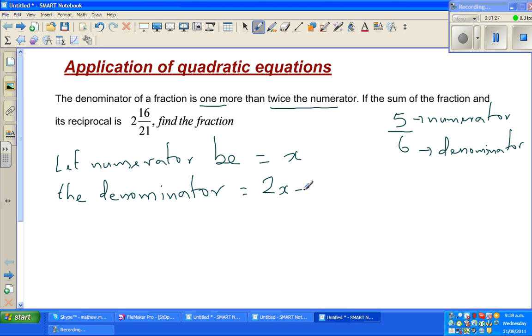This is what it means, one more than twice the numerator. Therefore the fraction has a numerator and denominator, so it's x over 2x plus 1. This is how you read the question. Try to break down each part or each sentence into smaller pieces.